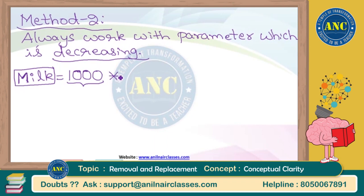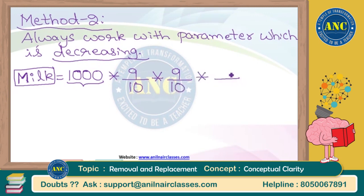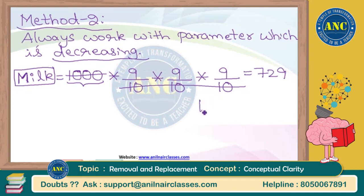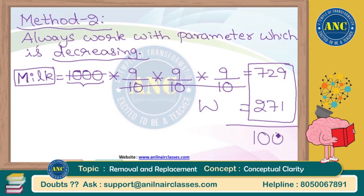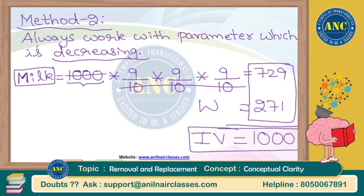Using the same procedure: 100 out of 1000 is taken out — 1/10 removed, 9/10 remains. This happens three times. So final milk = 1000 × (9/10)³ = 729 ml. Water = 1000 − 729 = 271 ml. Milk to water ratio is 729:271, and 729 + 271 = 1000, confirming it equals the initial volume. This important point holds in both method 1 and method 2.